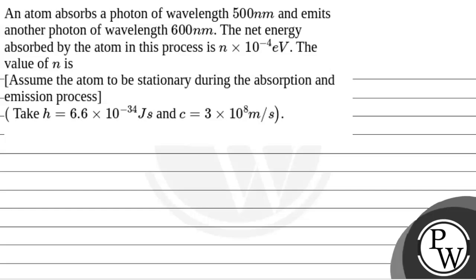Hello, let's read the question. The question says that an atom absorbs a photon of wavelength 500 nanometer and emits another photon of wavelength 600 nanometer.